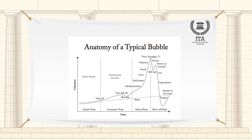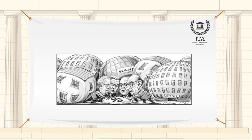When the prices of securities or other assets rise so sharply and at such a sustained rate that they exceed valuations justified by fundamentals, making a sudden collapse likely — at which point the bubble bursts — this may impact discretionary spending and hinder economic growth.